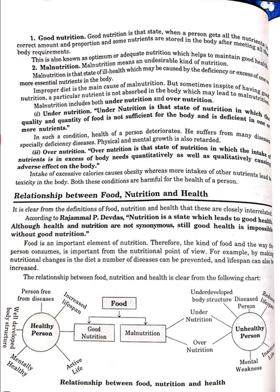Under-nutrition is that state of nutrition in which the quality and quantity of food is not sufficient for the body, being deficient in one or more nutrients. In such a condition, a person's health suffers from many diseases, especially deficiency diseases, and physical and mental growth is also affected. Over-nutrition is that state in which the intake of nutrients is in excess of body needs, both quantitatively and qualitatively, causing adverse effects — excessive calorie intake causes obesity.